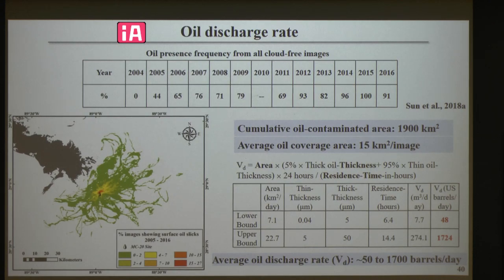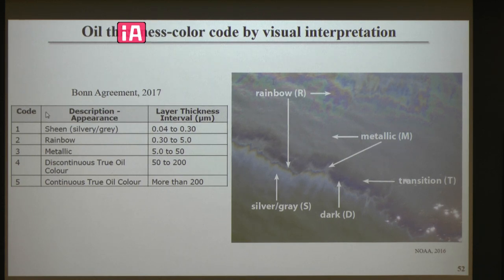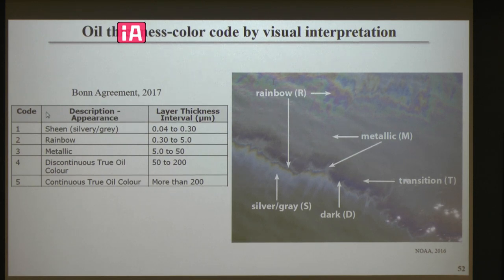You mentioned thin and thick oil thickness — is that the difference between crude oil and emulsion, or something else? No, that's another classification. The thin and thick classification is from the Bonn Agreement. Thin oil is the sheen category, thick oil is the metallic or rainbow category — it's a color code for crude oil. But at sheen-level thickness around 0.04 to 0.05 microns, you cannot actually see a spectral response — it's only detectable from the Fresnel effect or sun glint.